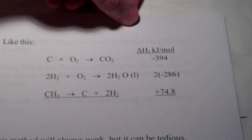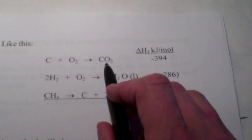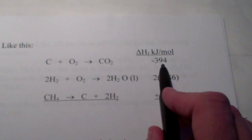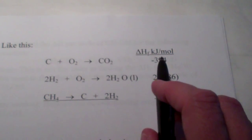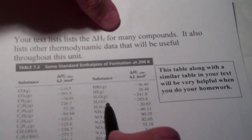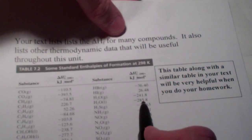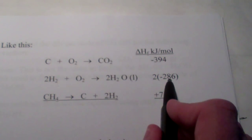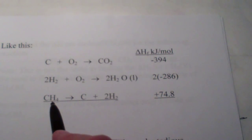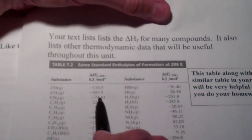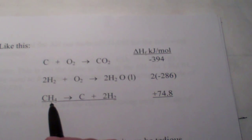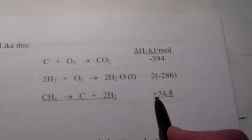Where did I get these numbers? The heat of formation of carbon dioxide is negative 393.5, rounded to negative 394 to simplify. The heat of formation of liquid water is negative 285.8, and since I'm making two of them, I double it. The heat of decomposition of methane is positive 74.8 — the data table shows negative 74.8 for formation of methane, but since it's a reactant being decomposed, the magnitude stays the same but the sign changes.